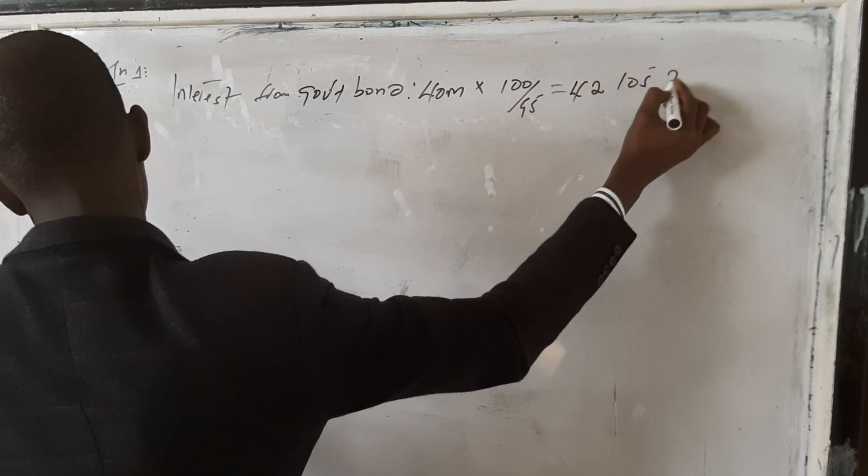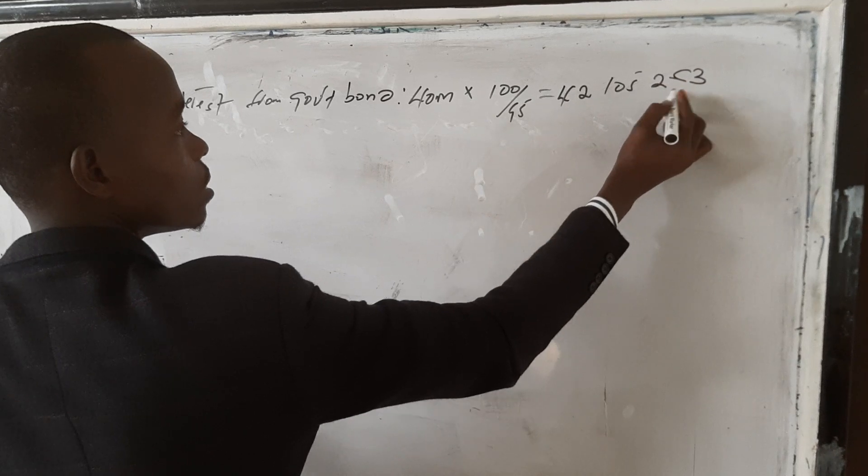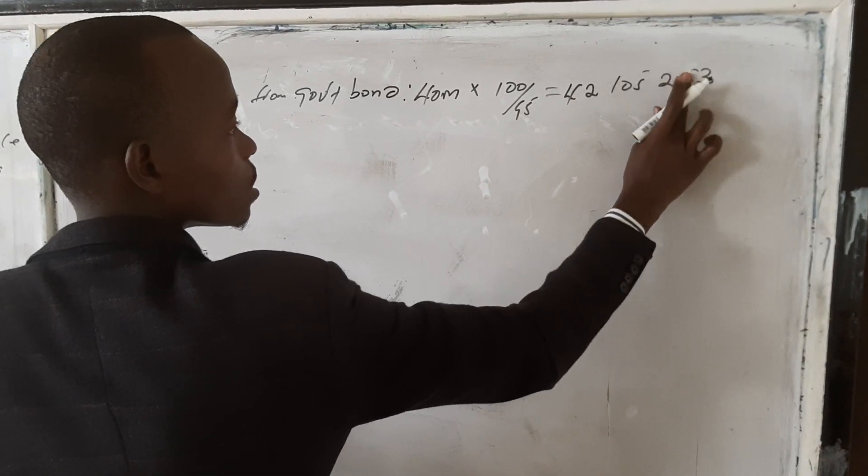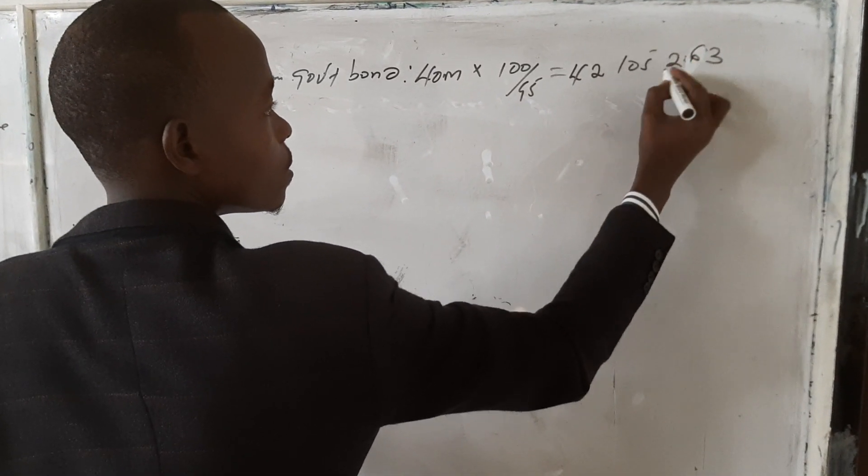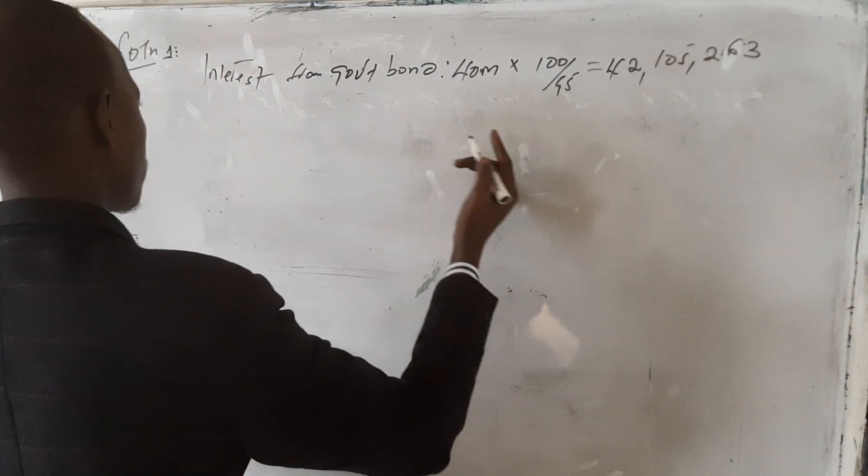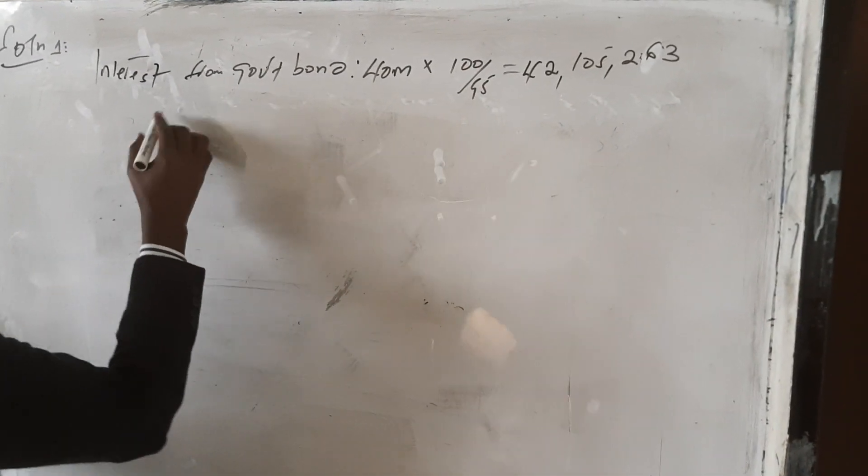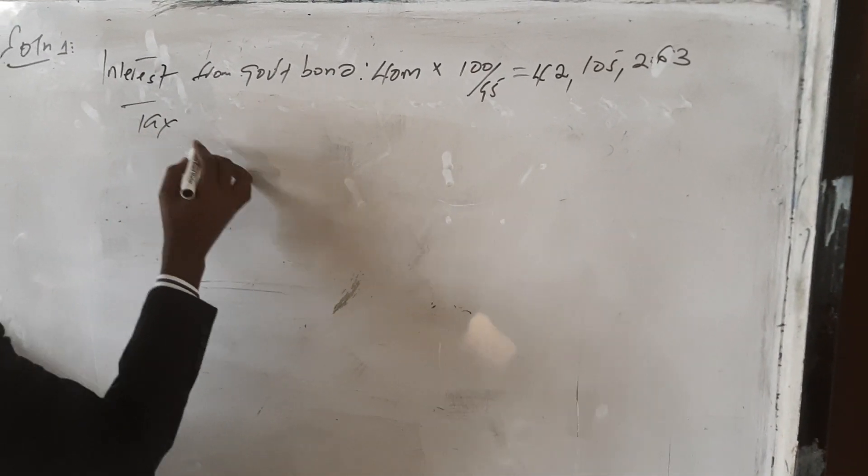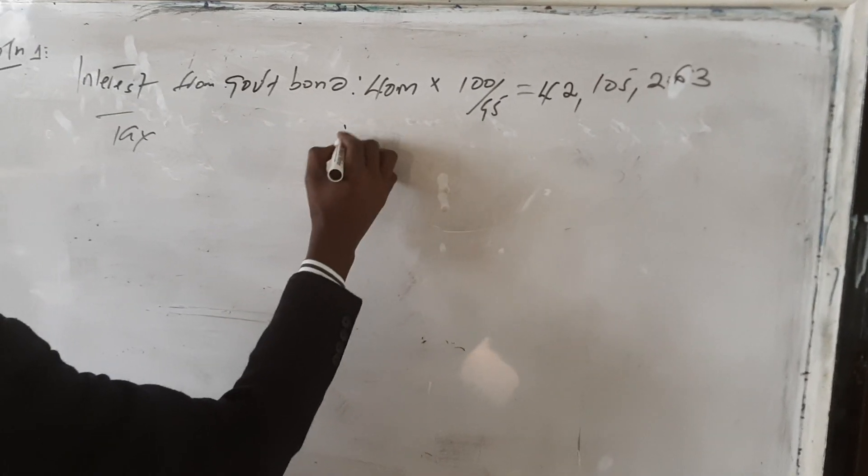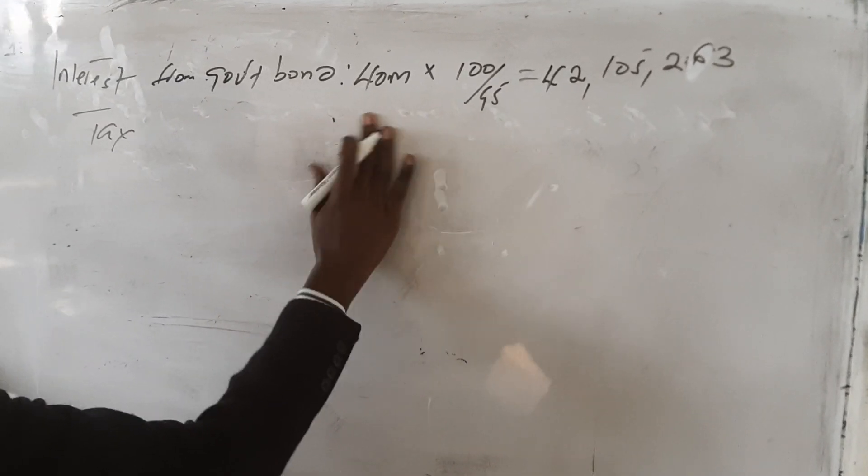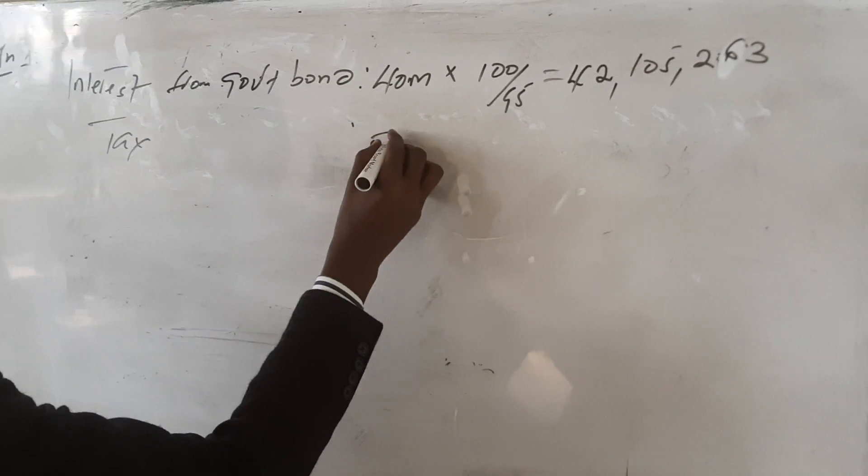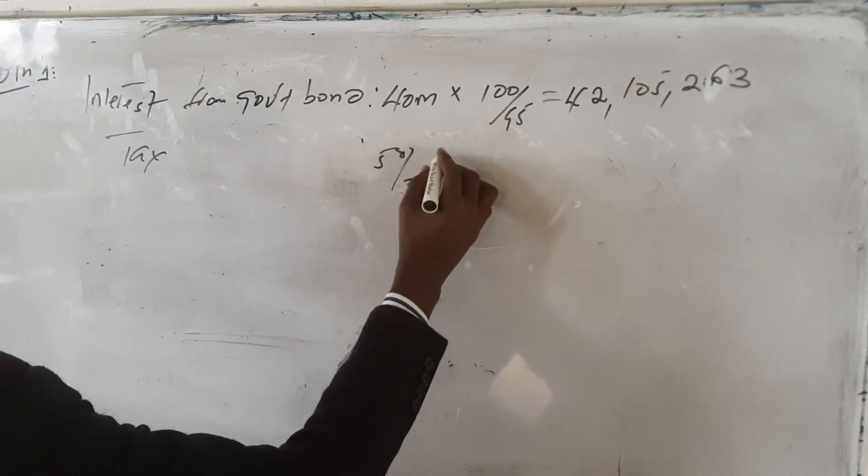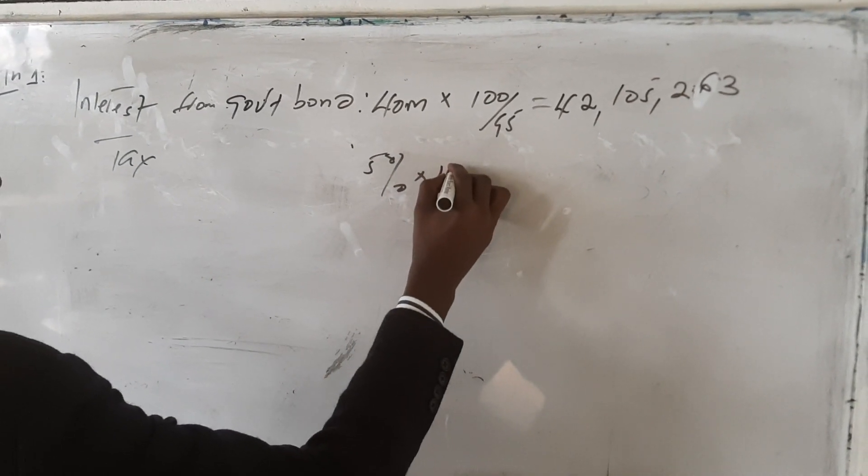Then you need to tax it. By taxing it, it is 5% times this 42 million.